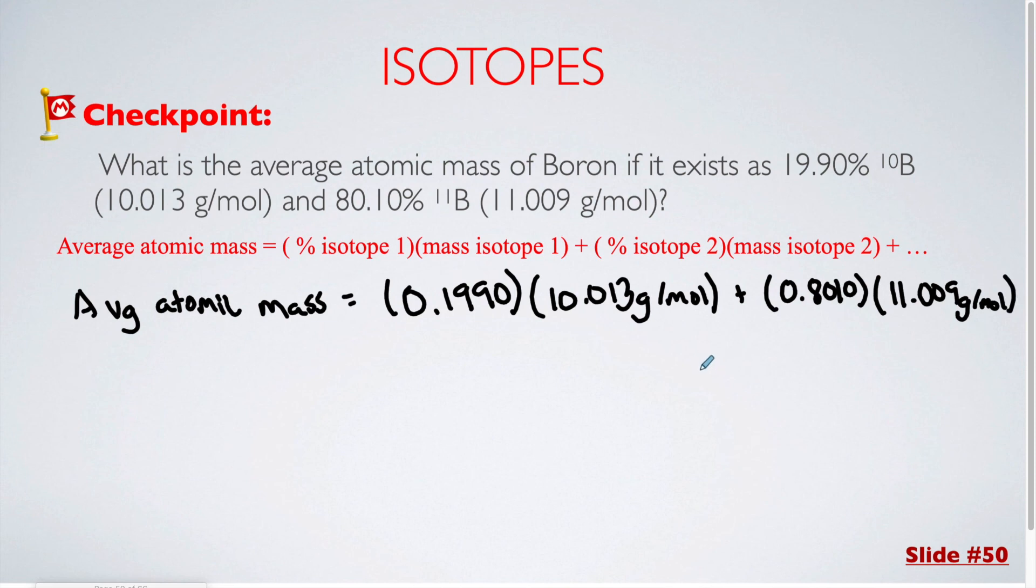What I'm going to do here is I'm going to find the individual answer to each of these two, and then I'm going to add that together to get my final answer. If we do that, our total mass is going to be 10.81 grams per mole. That is the average atomic mass, taking into account the percentage breakdown for each isotope.